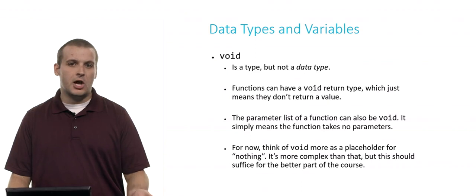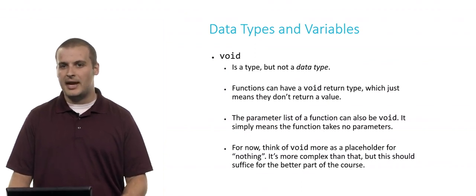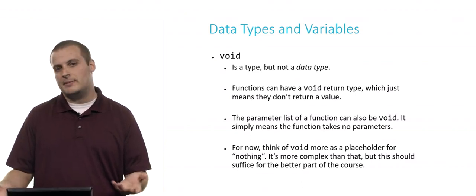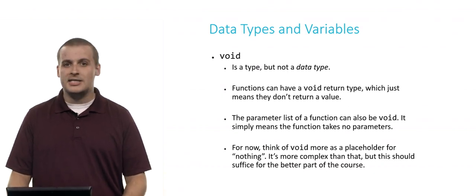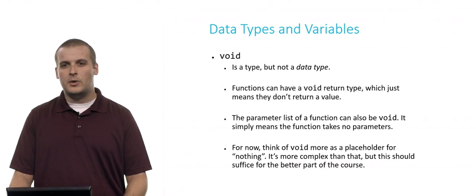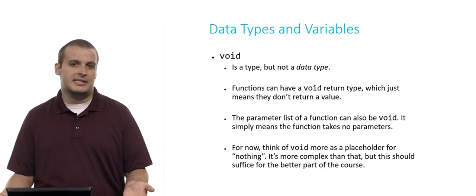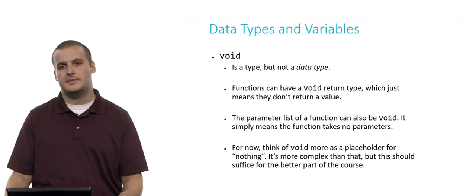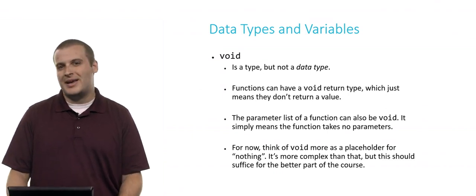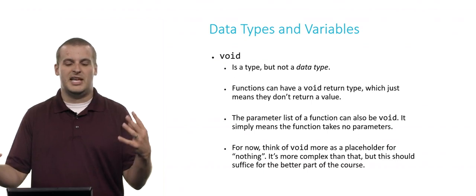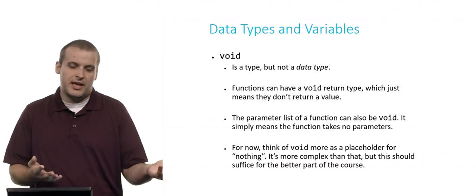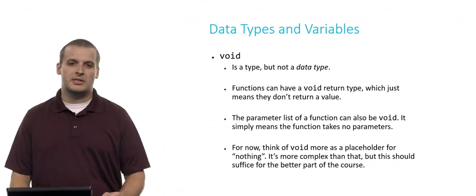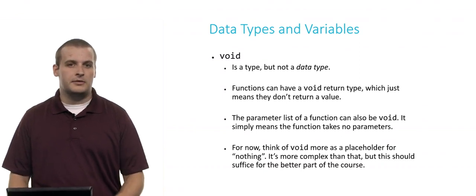The parameter list of a function can also be void. And you've also seen that quite a bit in CS50, too. Int main void, does that ring a bell? Basically, what that means is that main doesn't take any parameters. There's no arguments that get passed into main. Now, later on, we'll see that there is a way to pass arguments into main. But so far, what we've seen is int main void. Main just doesn't take any arguments. And so we specify that by saying void. We're just being very explicit about the fact that it doesn't take any arguments. So for now, suffice it to say that void basically should just serve as a placeholder for you as thinking about it as nothing. It's not really doing anything. There's no return value here. There's no parameters here. It's void. It's a little more complex than that, but this should suffice for the better part of the course. And hopefully now you have a little bit more of a concept of what void is.